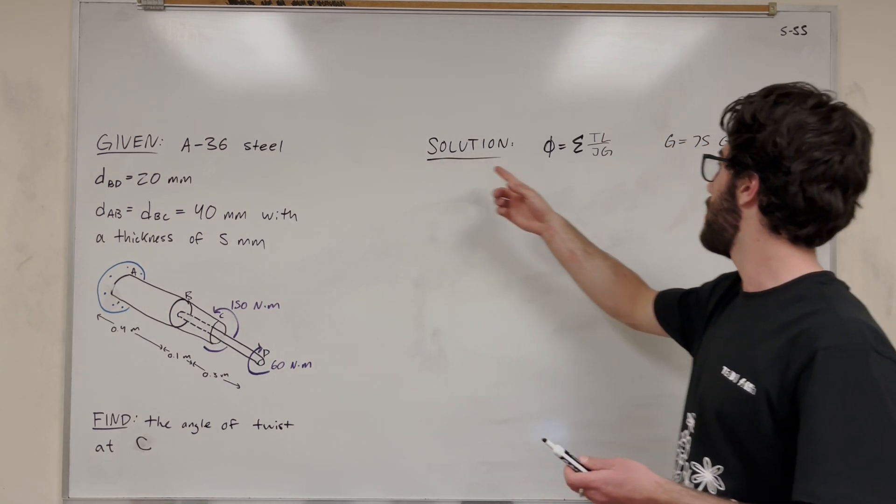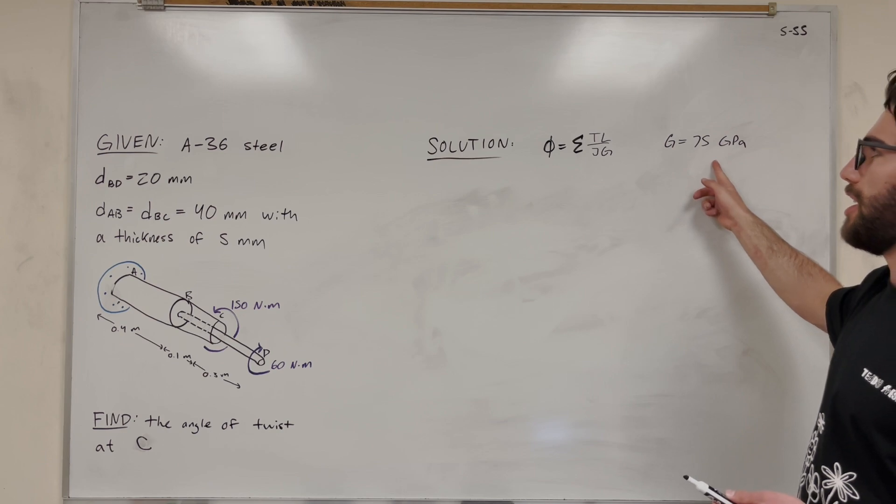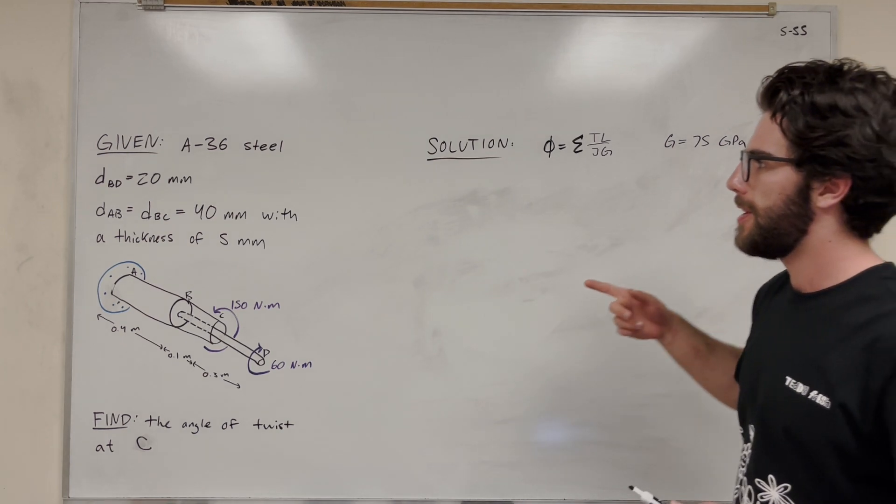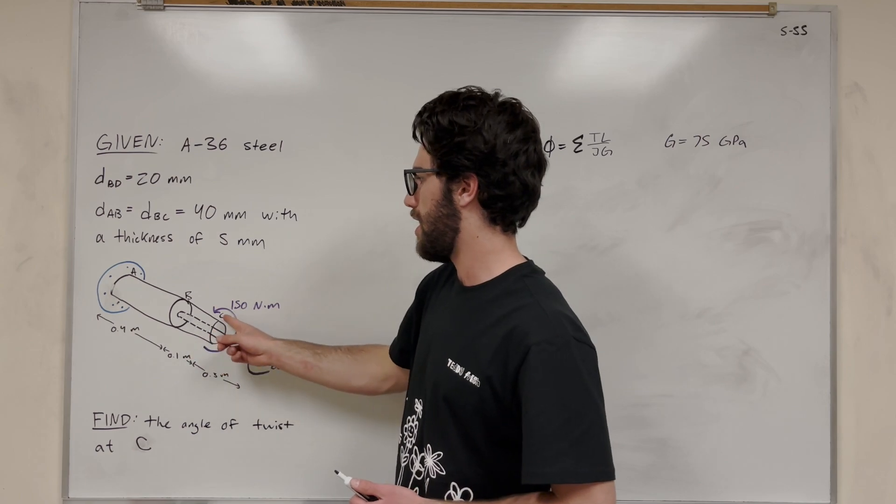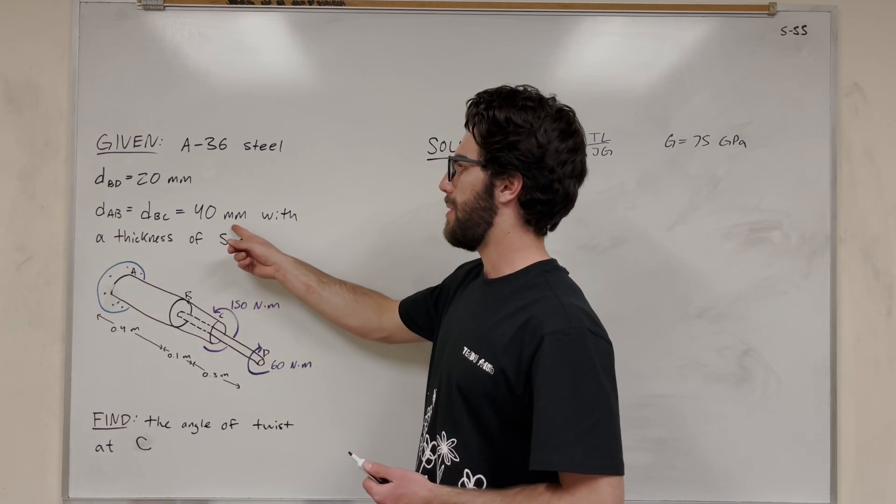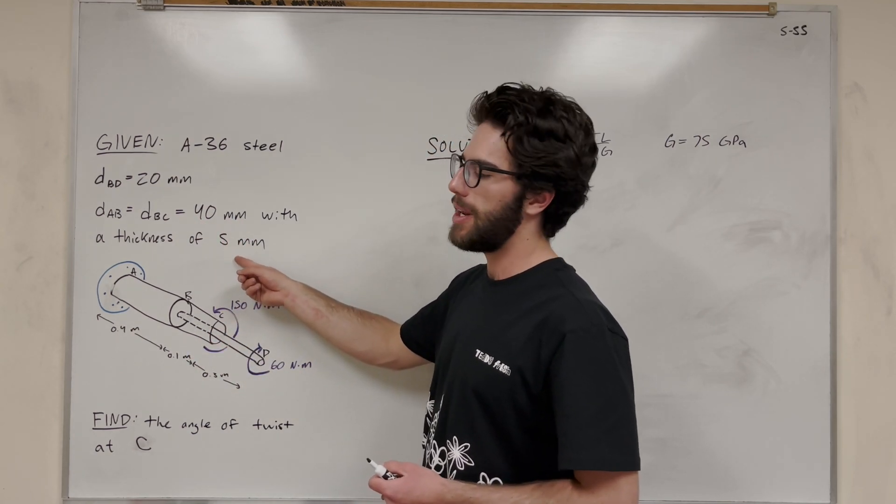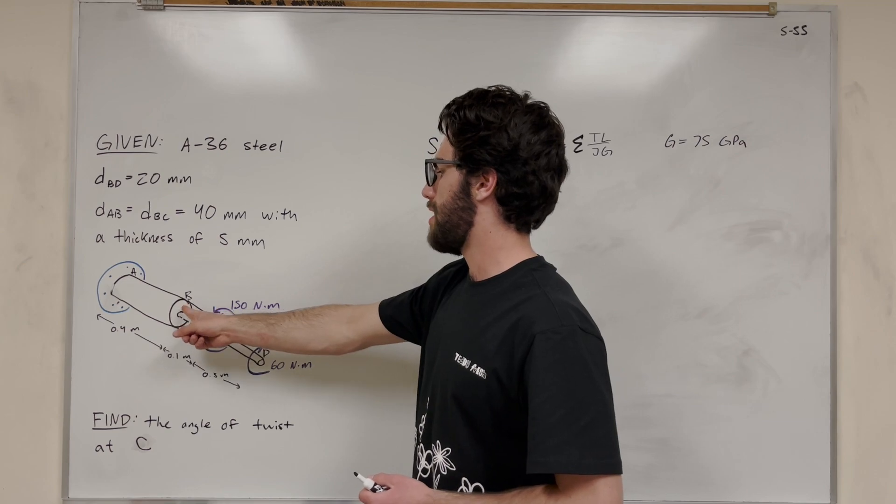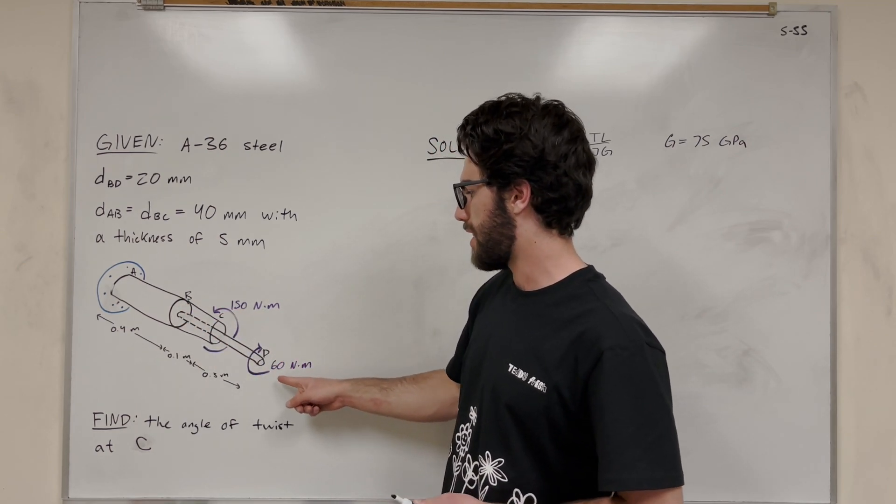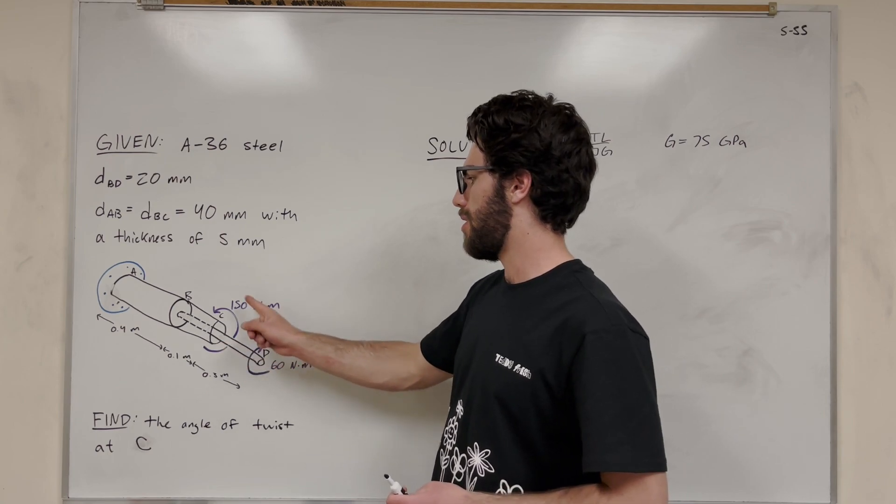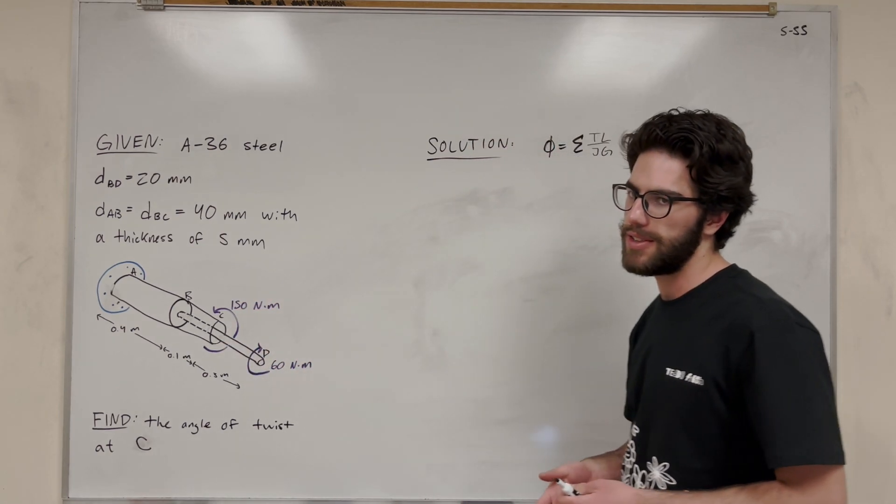We have this A36 steel with modulus of rigidity of 75 GPa. The diameters that we're given: diameter from A to C of this outer rod is 40 millimeters with a thickness of 5 millimeters. Then it's connected at B to this thinner rod which goes all the way out here. There are these two torques acting, one of them going counterclockwise, one going clockwise. We're finding the angle of twist of C.